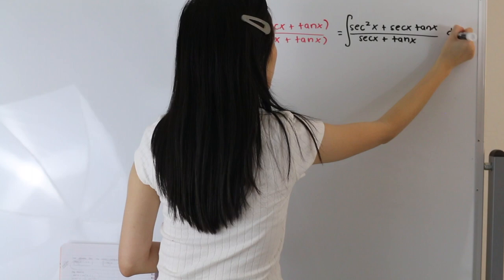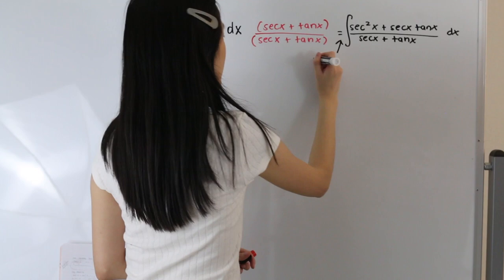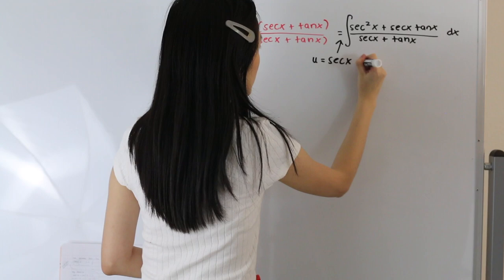And from here, this problem becomes a u-substitution problem. So we can set u equal to our denominator, which is secant of x plus tangent of x.